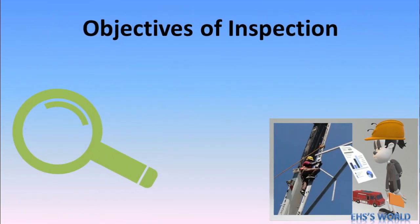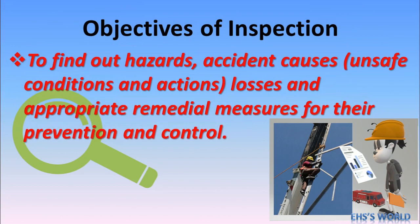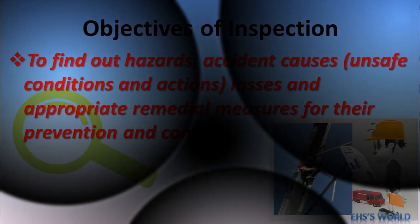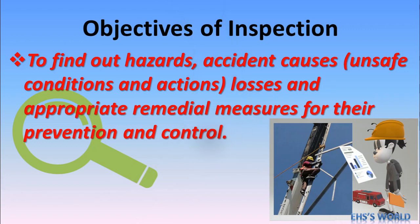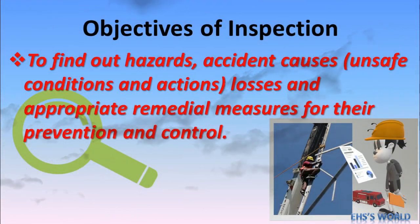The objectives of inspection are: to find out hazards, accident causes, unsafe conditions, and unsafe actions, losses, and appropriate remedial measures for their prevention and control. The objective is to find out hazards, accident causes, losses, and the control measures to prevent and control hazards and accidents at the workplace.